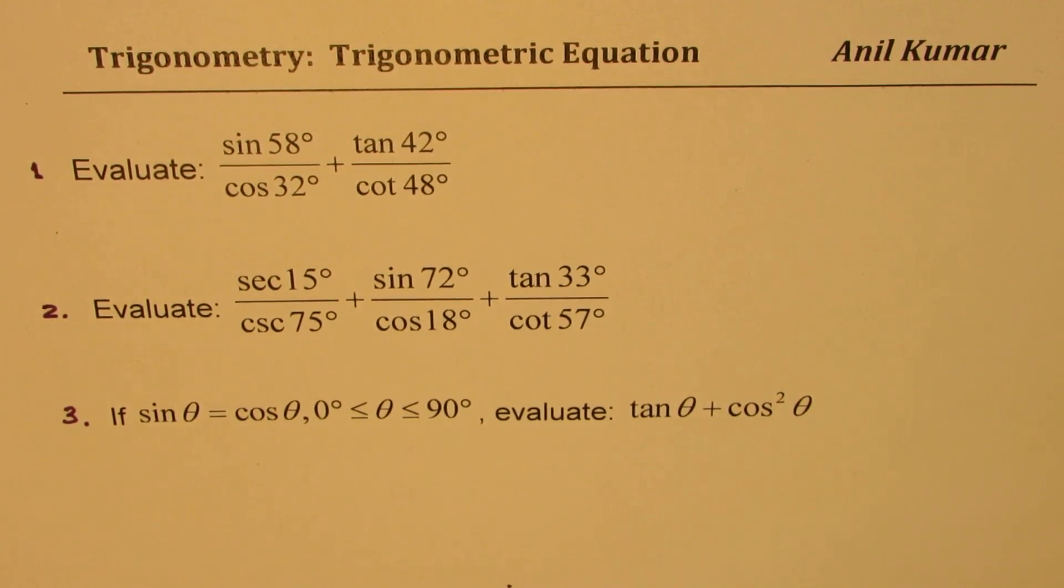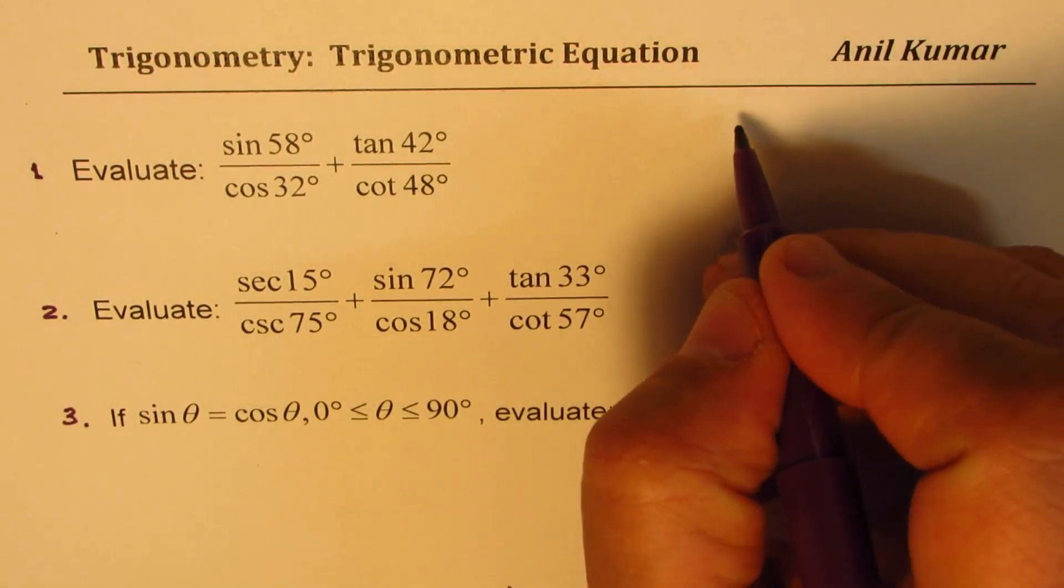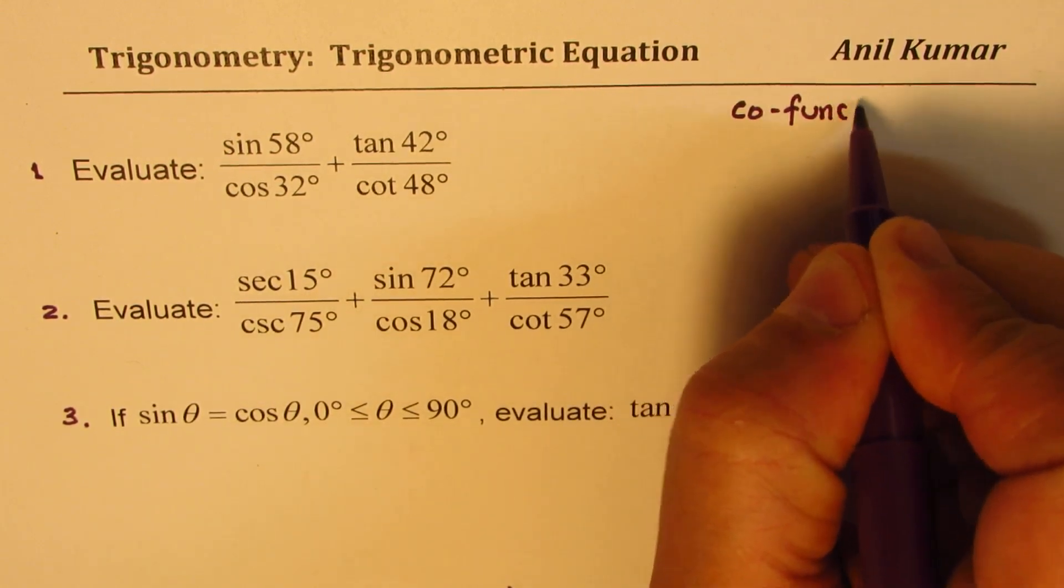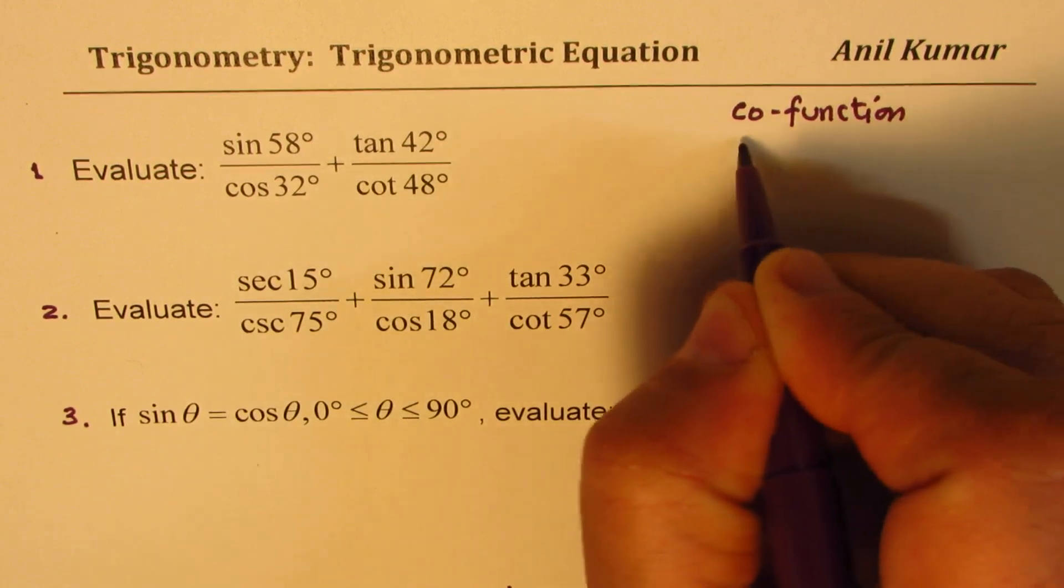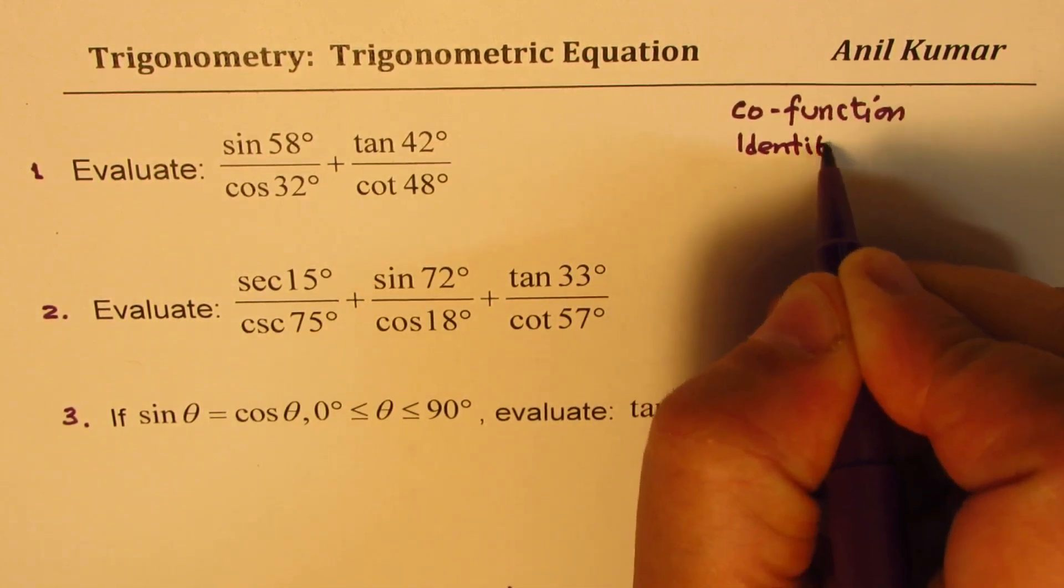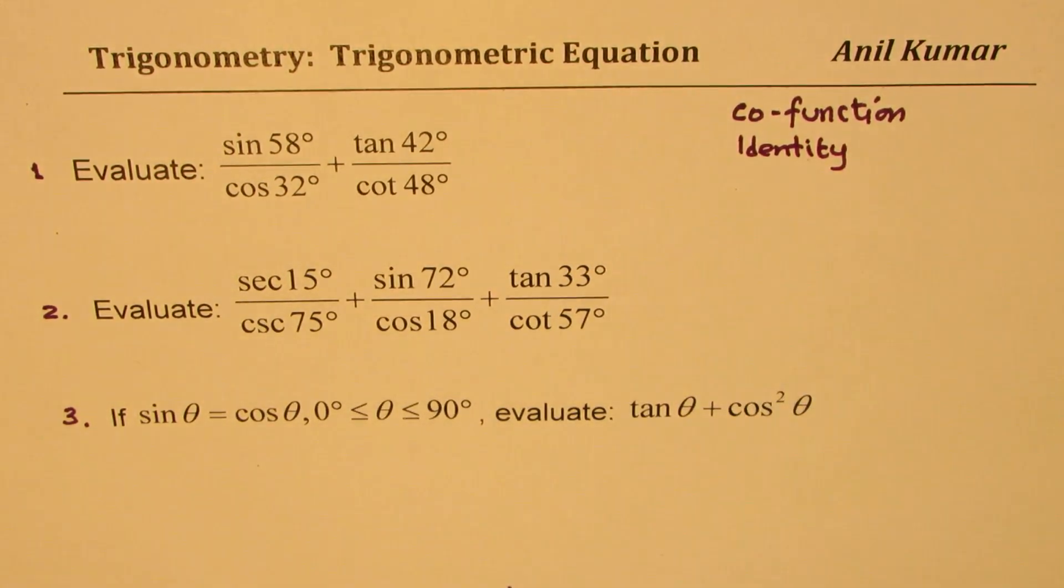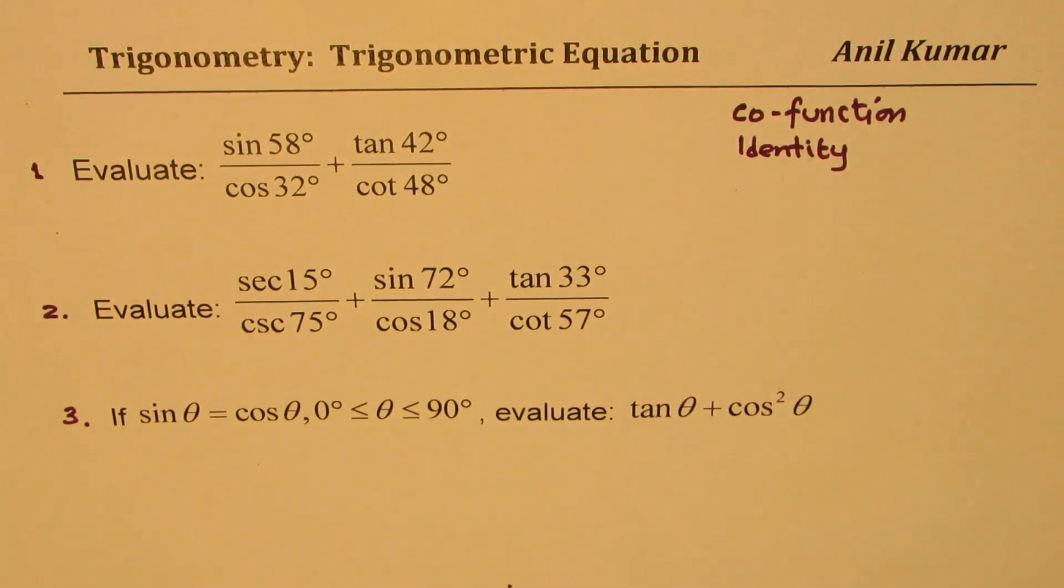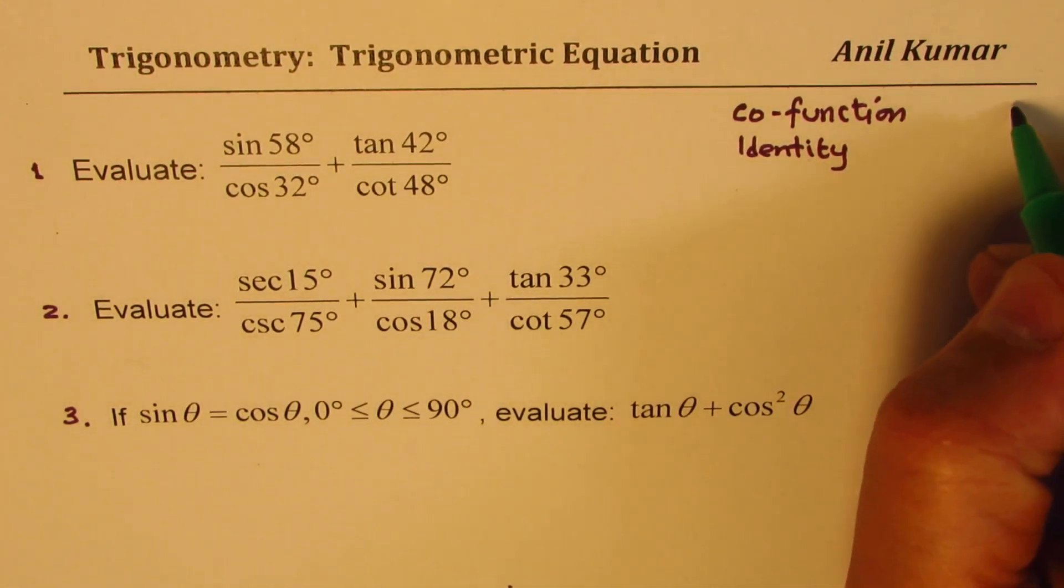Now I've clubbed three questions here. All of them have one particular concept and we call this co-function identity. It really means that in any right triangle, let's take a right triangle.